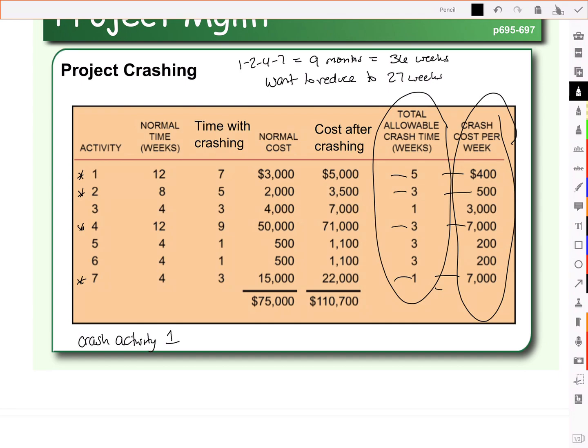You're building this house. The customer comes to you and says, I can't wait 36 weeks. How much would it cost me to get in it early? How about 27 weeks? So we say, okay, we can speed this process up, but it will cost you. So the question is, how much should we charge them to crash the project?